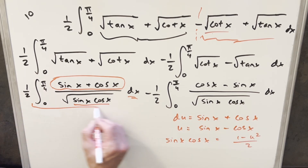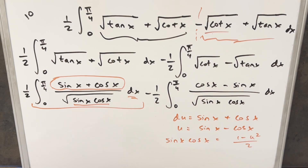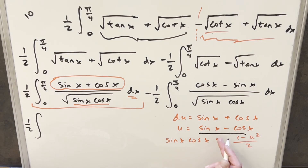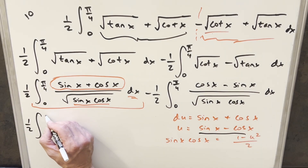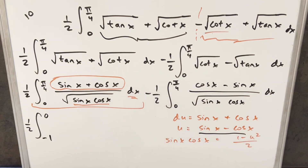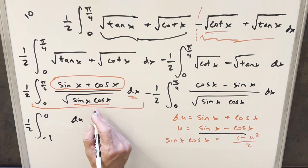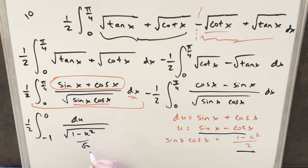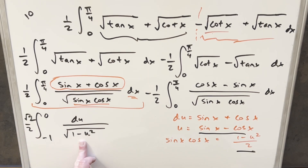Now applying this substitution to the first integral, with the 1/2 in front: the upper bound is u(π/4) = 1/√2 − 1/√2 = 0, and the lower bound is u(0) = sin 0 − cos 0 = 0 − 1 = −1. The numerator becomes du, and the denominator √(sin x cos x) = √((1 − u²)/2), which gives √(1 − u²) over √2. Bringing the √2 up front as a constant, the first integral becomes (√2/2) · ∫₋₁⁰ du/√(1 − u²). That's a standard arc sine integral.